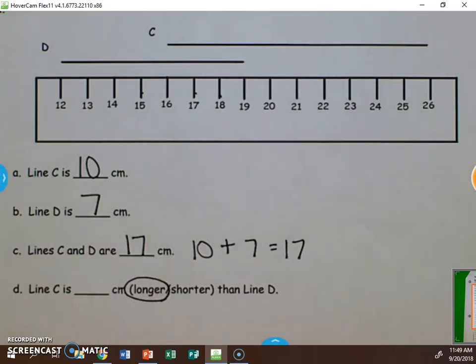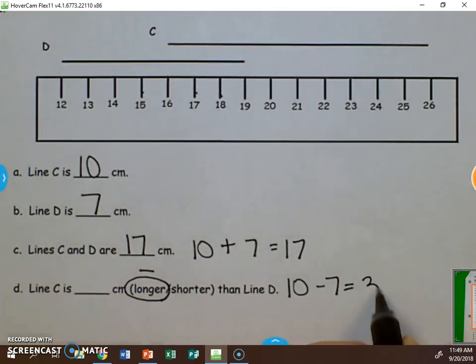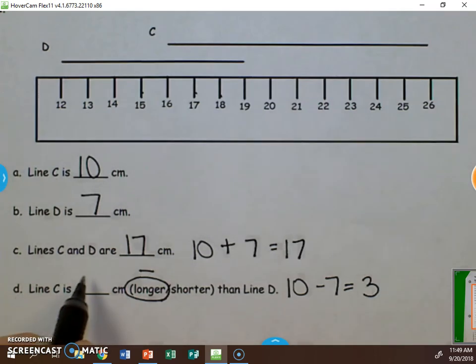Then we go back and we figure out what we're supposed to do. Once again, here's that word longer and that word shorter. So we're going to subtract. 10 minus 7 equals 3. So line C is 3 centimeters longer than line D. This is how to use the broken ruler strategy in measurement.